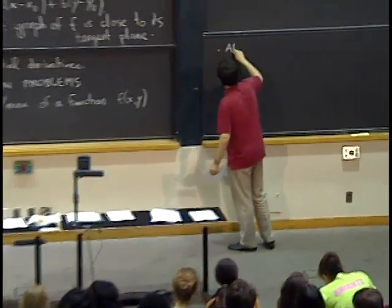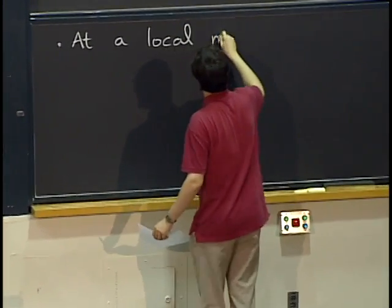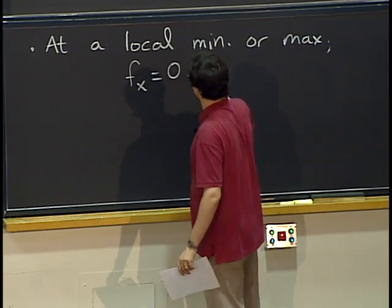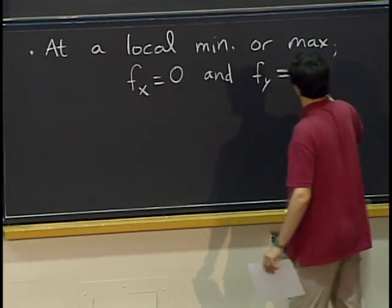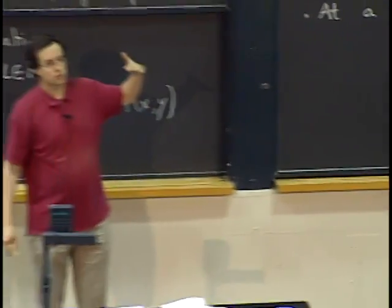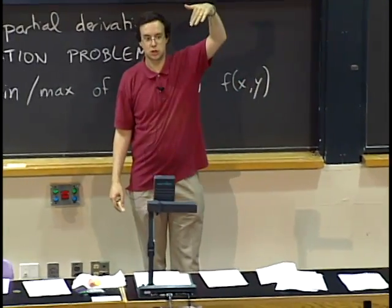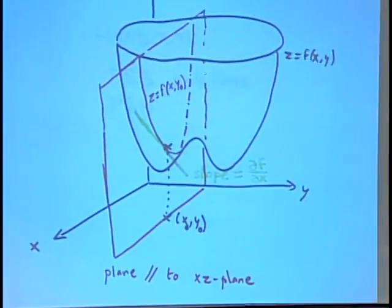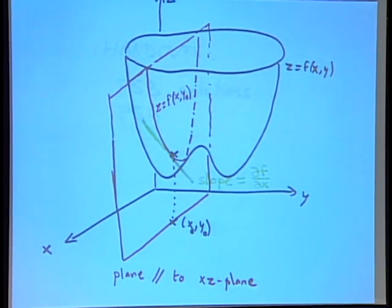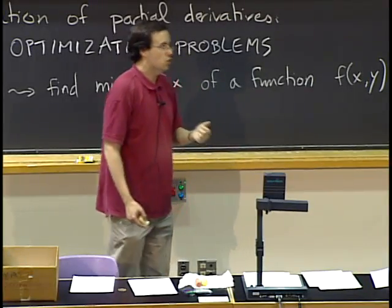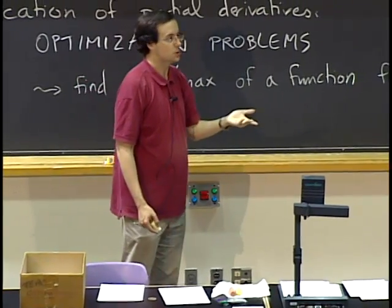If we have a local minimum or a local maximum, then both partial derivatives — partial f, partial x and partial f, partial y — are both zero at the same time. If f sub x is zero, it means changing x doesn't change f to first order. But if partial f, partial y is not zero, then by changing y I could still make the value larger or smaller, so it wouldn't be an actual maximum or minimum. I need both partial derivatives to be zero.